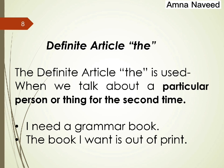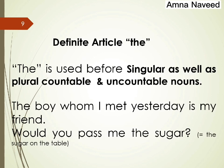We use 'the' when we want to talk about something or someone specifically, or when we are referring to something for the second time. For example: 'I need a grammar book. The book I want is out of print.' The first mention uses 'a'; the second mention uses 'the'. The definite article 'the' is used before singular and plural countable nouns as well as uncountable nouns. For example: 'The boy whom I met yesterday is my friend' and 'Would you pass me the sugar?' — here 'the sugar' is uncountable but specific.